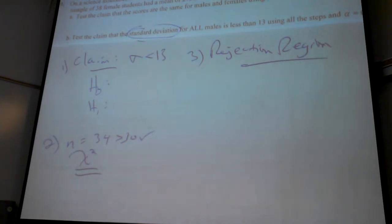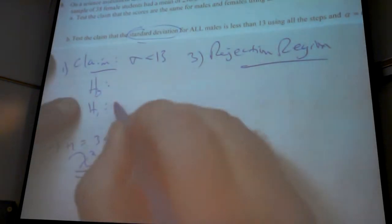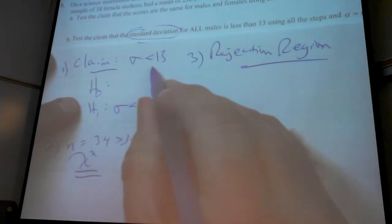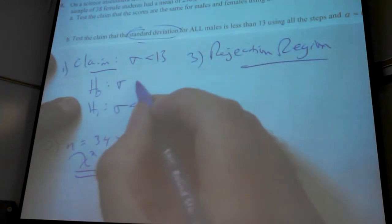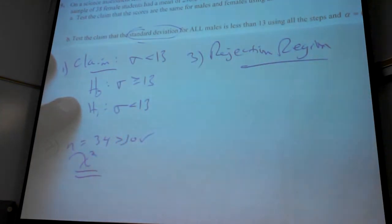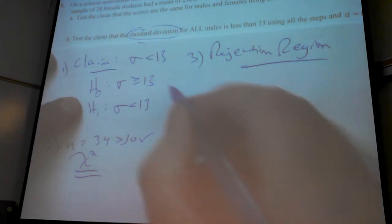The claim is it's less than 13. So which one is that? The H0 or the H1? The H1. Because it does not have an equal sign. So then H0 is going to be greater than or equal to 13. Yeah. So one tail or two tails? One. One tail.